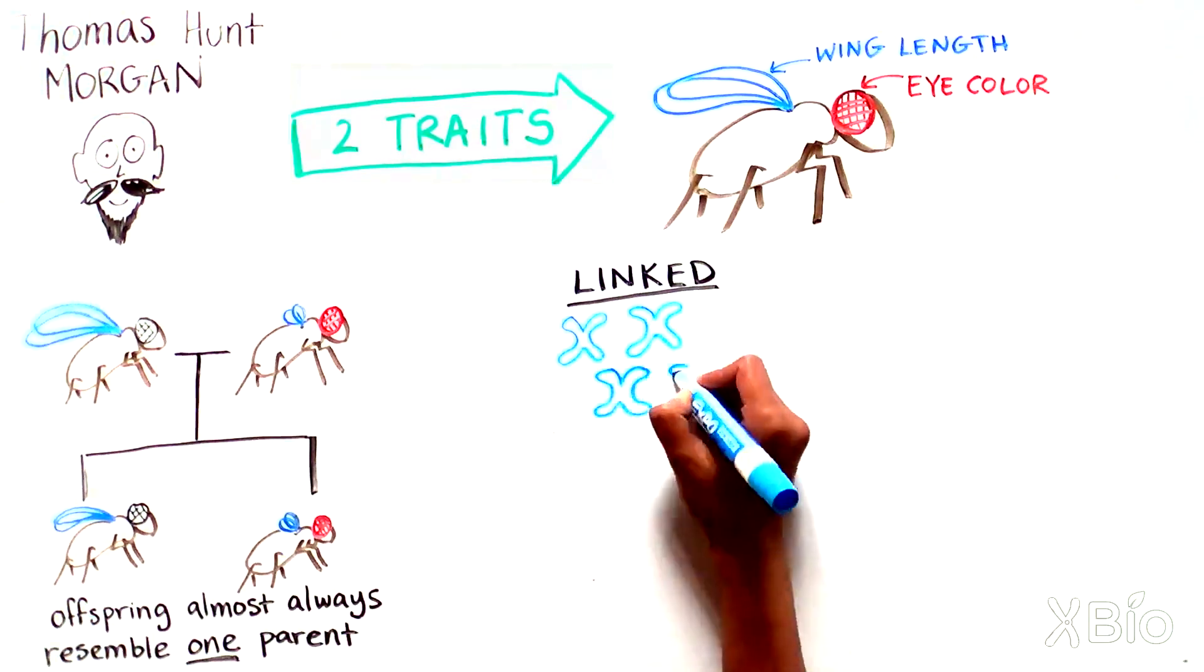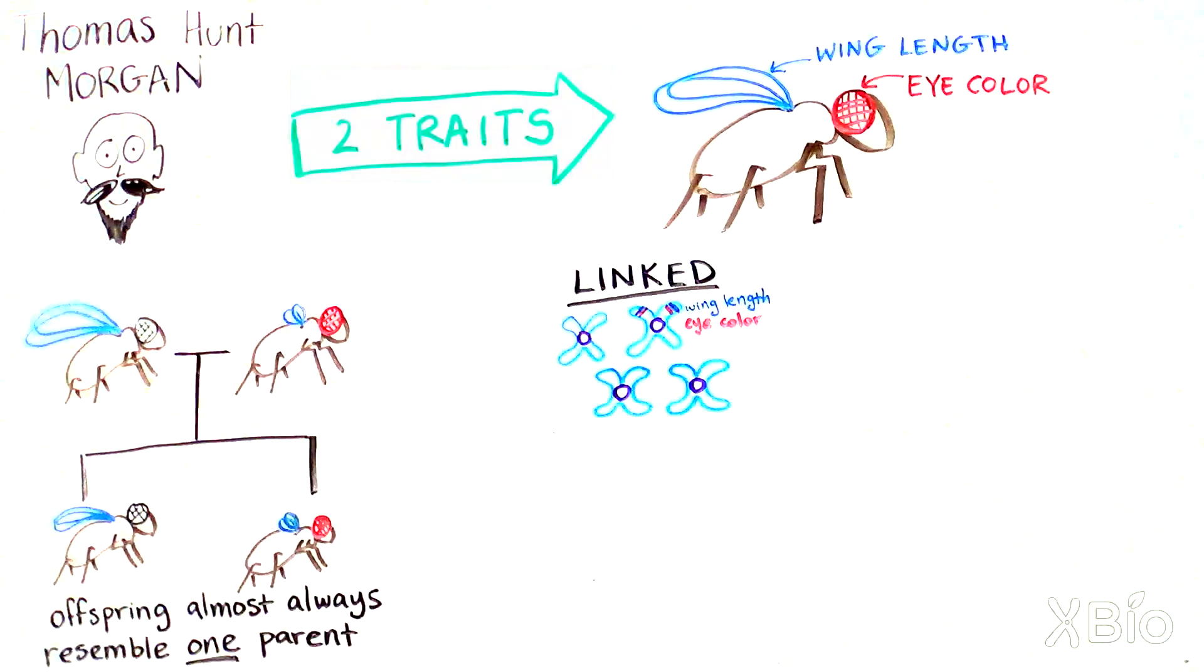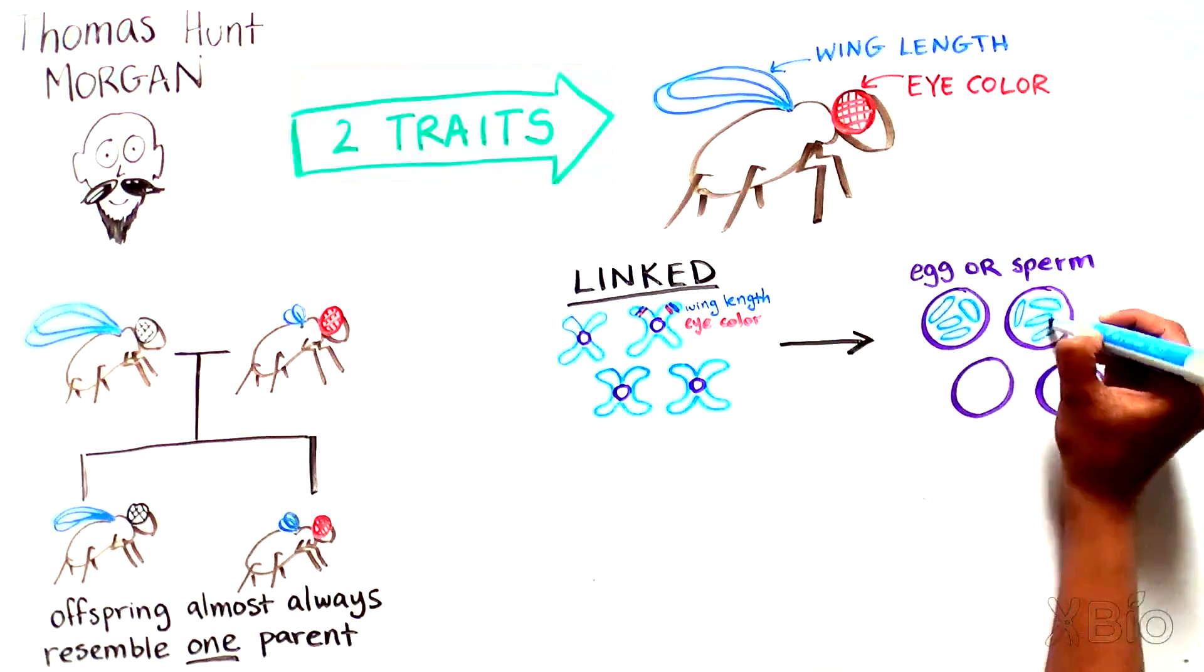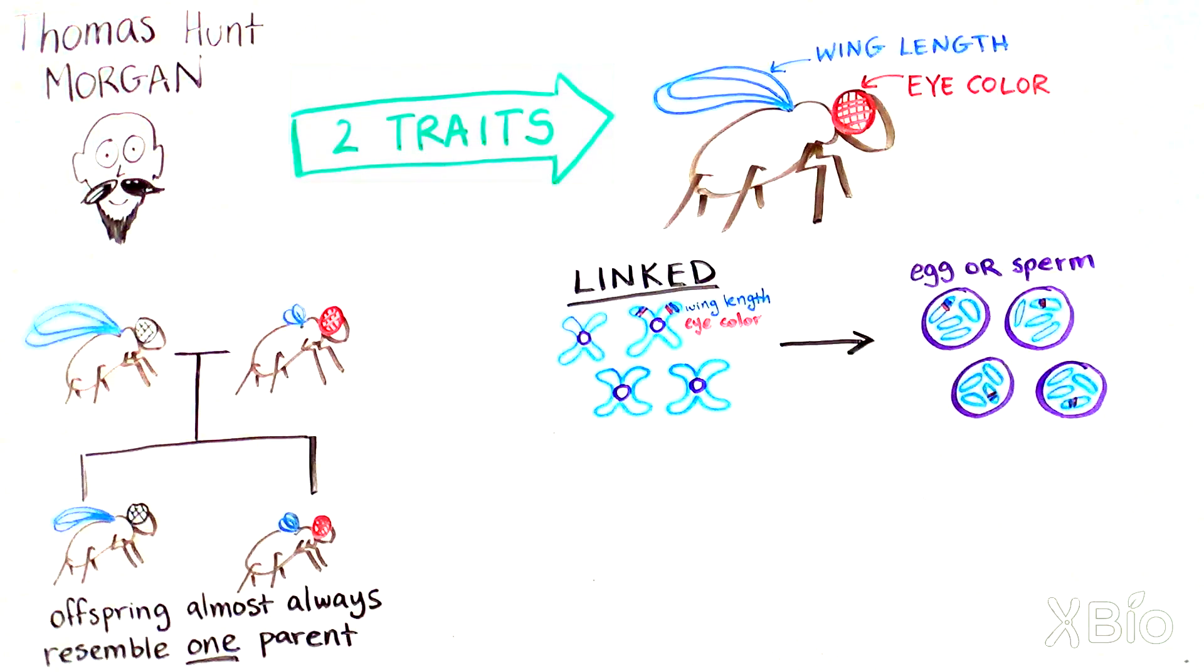Morgan guessed that the genes coding for these traits must lie on the same chromosome. So when sperm or eggs are formed, the two genes from the same parent always went into the same sperm or egg cell. They stayed linked together.